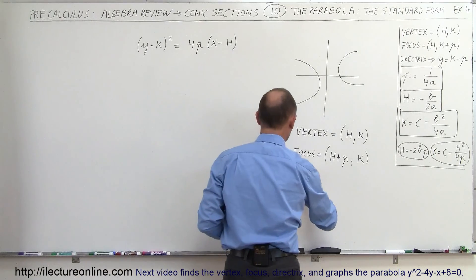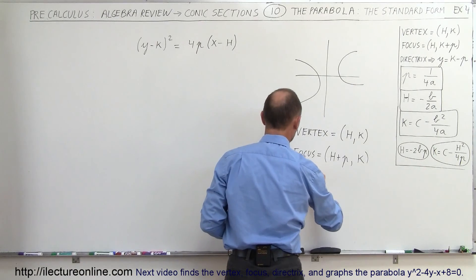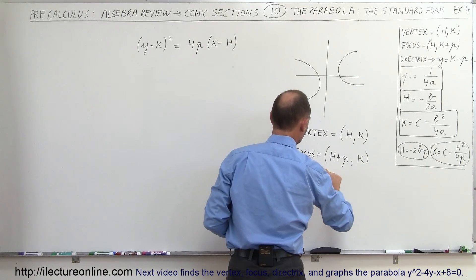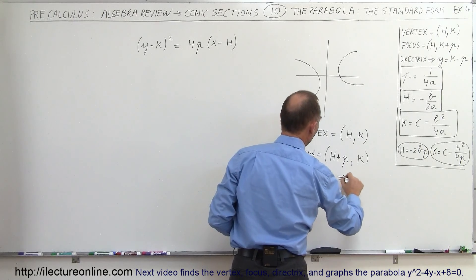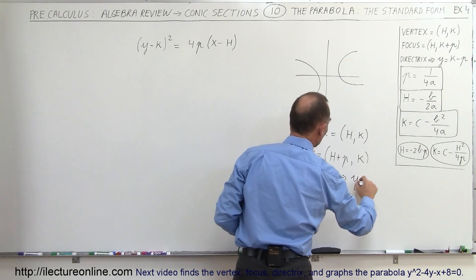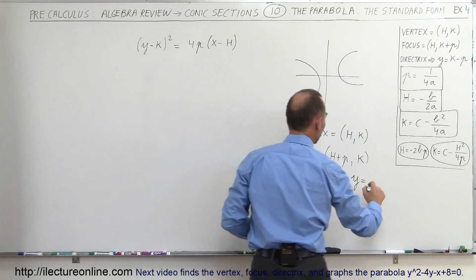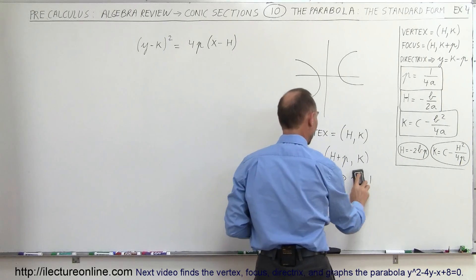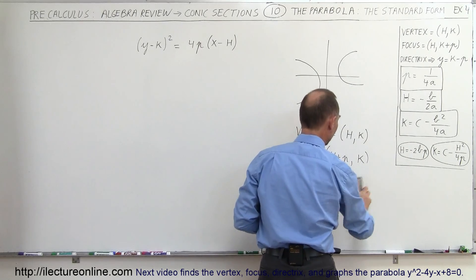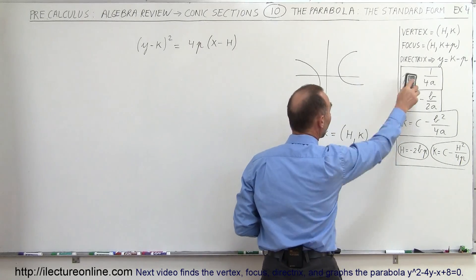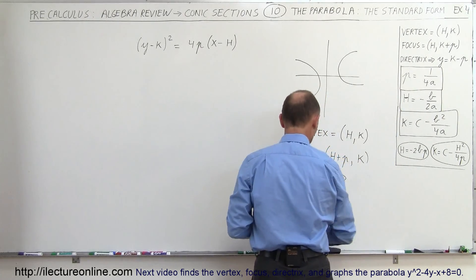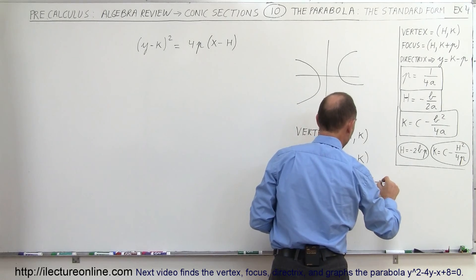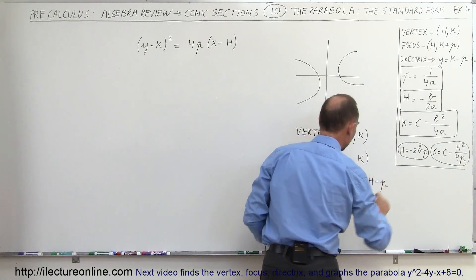The directrix will be found using the equation x equals h minus p. So that's where it's different — instead of y, it'll be x. So the directrix is x equals h minus p.